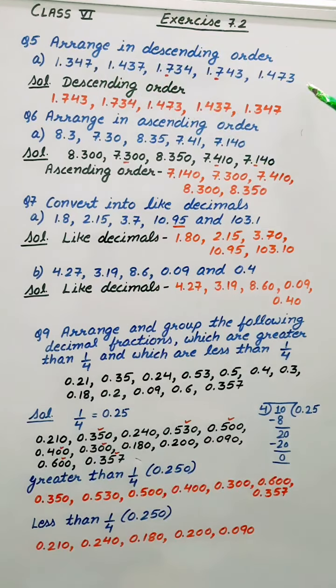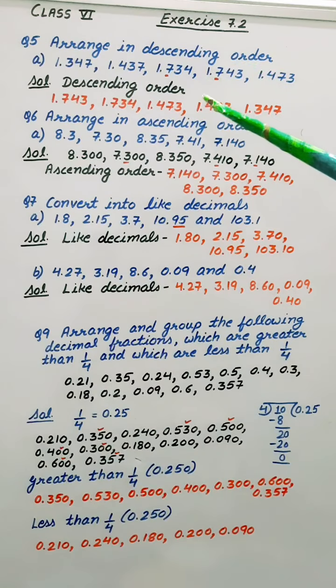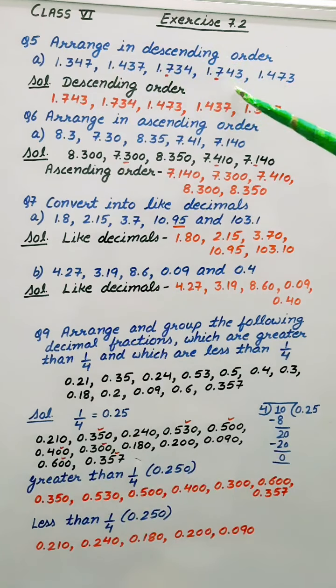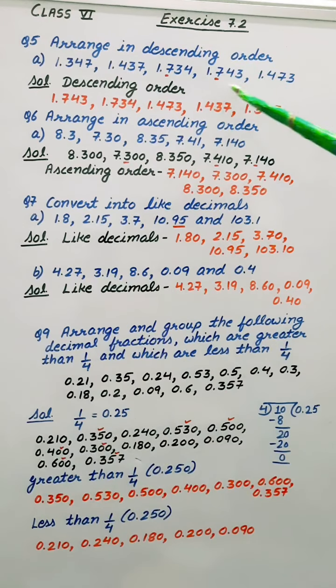Now these are the numbers. First of all, descending order means greater to smaller. So before the decimal, let's see the number of digits are same. So after the decimal here 7, here 7. Then next is 3 and 4. So this is the greatest one.